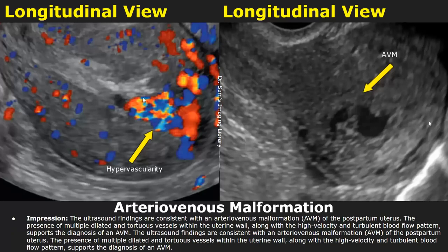In the impression, you can write findings such as multiple dilated and tortuous vessels within the uterine wall with high velocity and turbulent blood flow patterns, and conclude that these findings are consistent with an AVM.